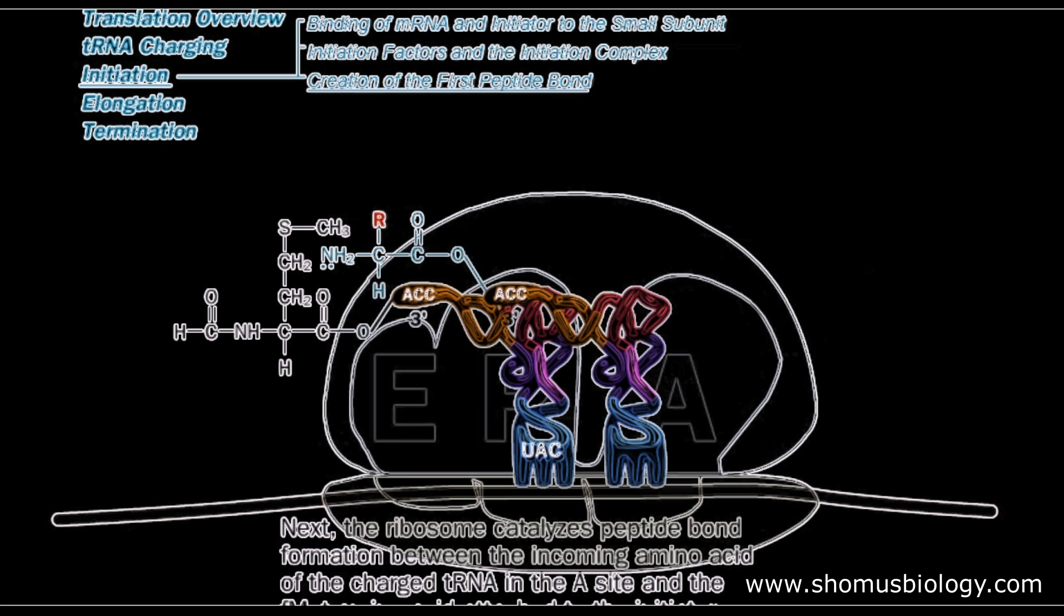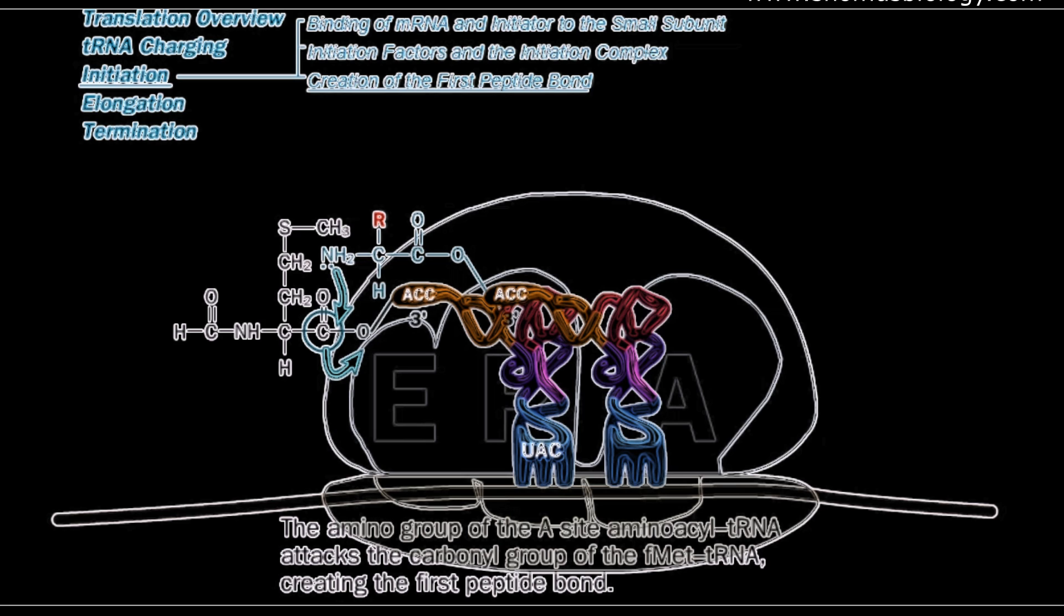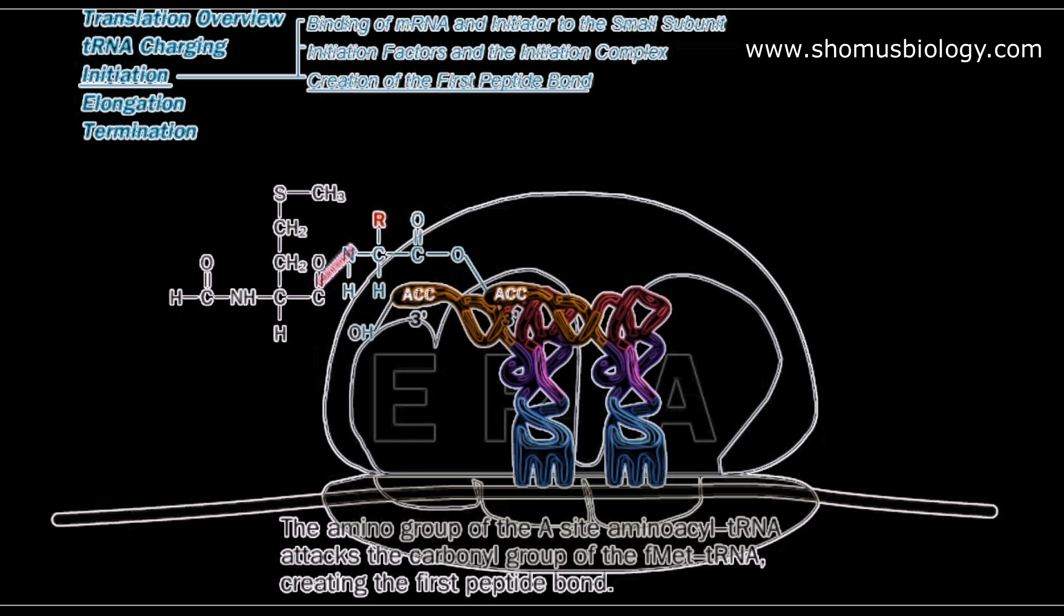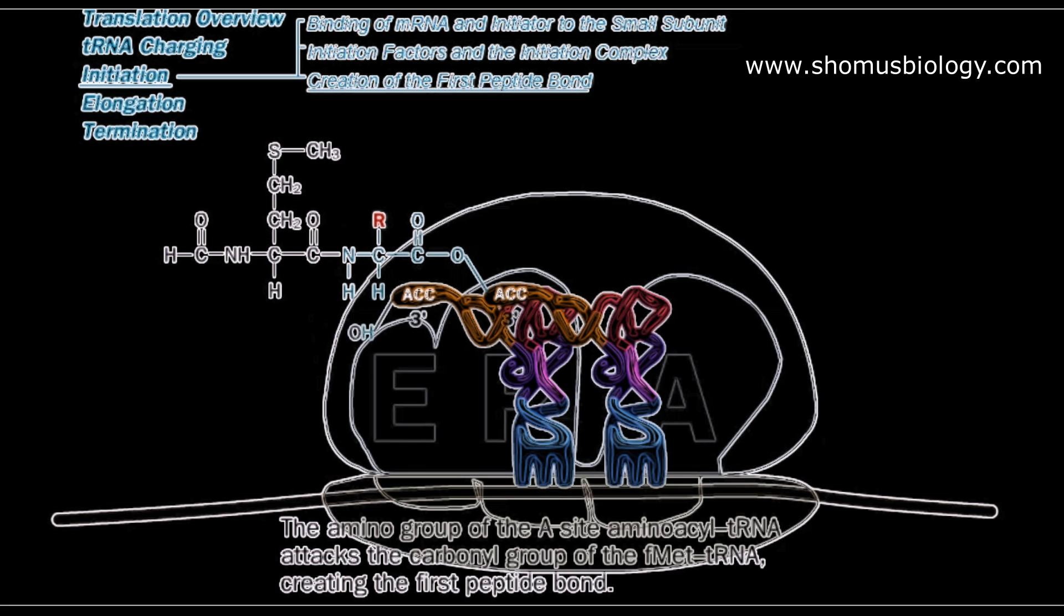This is nothing but the nucleophilic attack, so the lone pair of electrons in NH2 attacks the carbon. You can see the C-CH2-CH—that is the interaction carbon you can clearly see in this particular animation. As a result of which, the formylated form of methionine is transferred from the tRNA of the P site to the tRNA of the A site. This is how the peptide bond is formed, and this is catalyzed by the large ribosomal subunit, so it's a ribozyme activity that we can easily observe here.